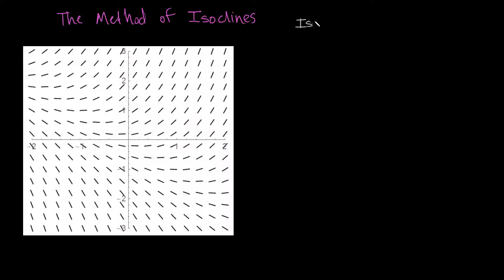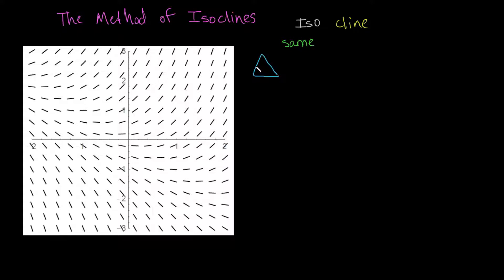Let's break this word apart. We have first the part that is 'iso', and second we have 'cline'. We've probably heard 'iso' before, maybe in the word isosceles, for an isosceles triangle. Iso means same — just same — in the same way that when you have an isosceles triangle, you have two sides that are the exact same length.